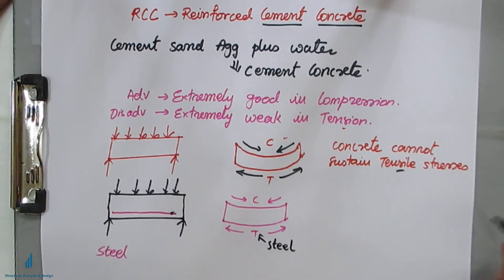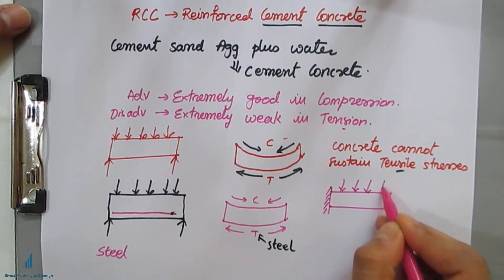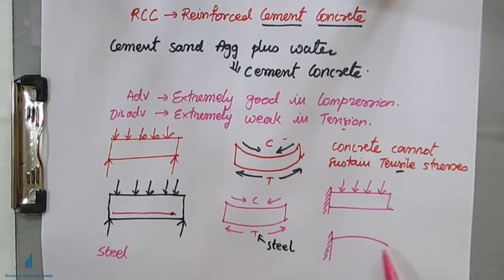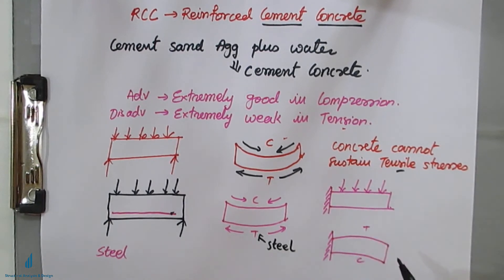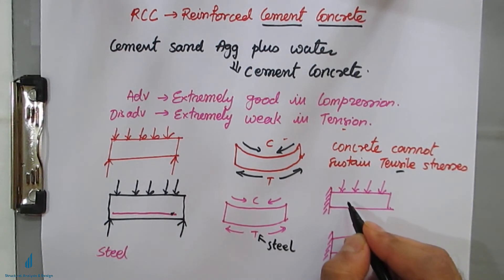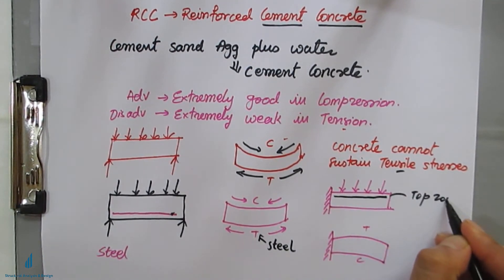But this is only with respect to the simply supported beam. If you take one more example — a cantilever beam — with loads acting on it, the bending pattern will change. Here, the upper fibers are in the tension zone and the bottom fibers are in the compression zone. In that case, you should not place the steel in the bottom zone — if you provide steel in the bottom zone, it will be a completely structural disaster. You have to reinforce the steel in the tension zone, and in the cantilever case the tension zone is at the top fiber, so you have to place the steel at the top zone.